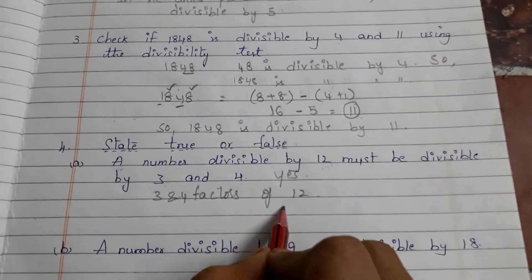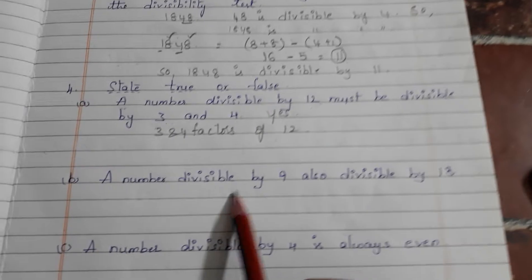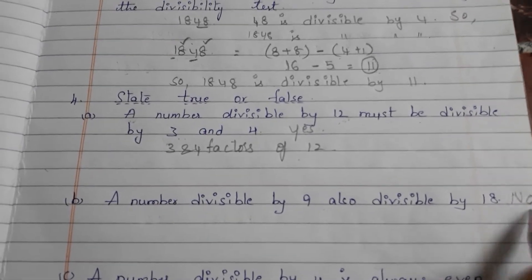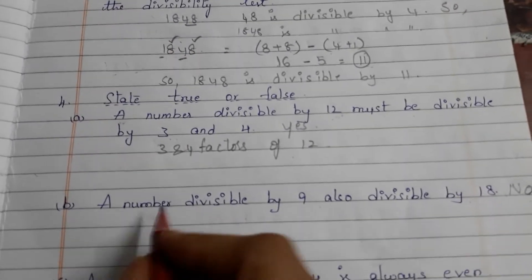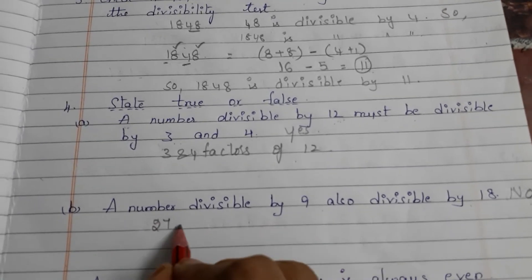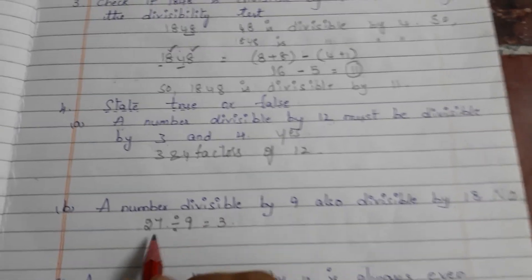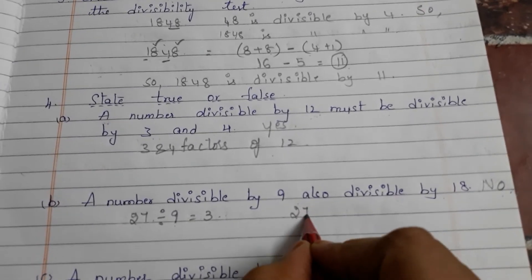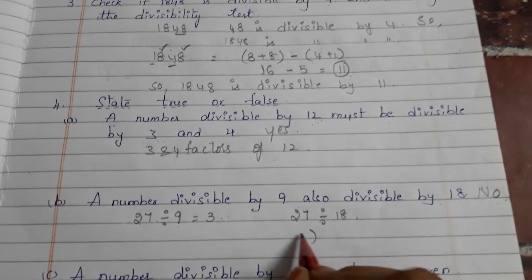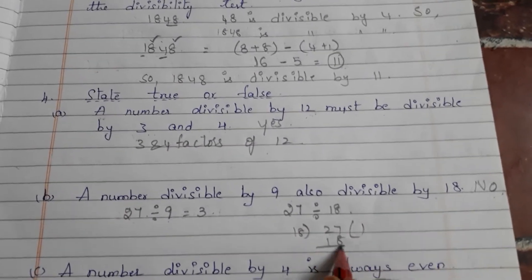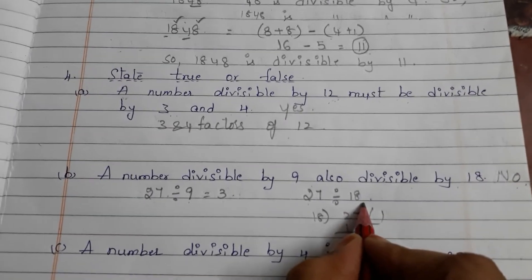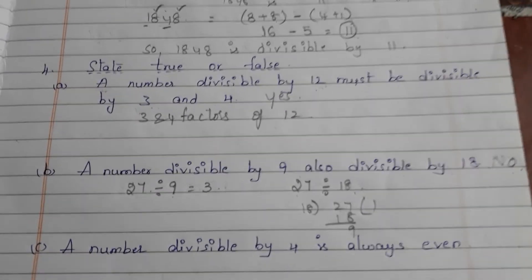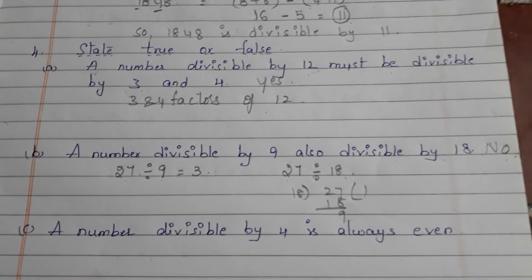Next: a number divisible by 9 also divisible by 18. This statement is false. Why? Let's see with an example. Take the number 27. 27 divided by 9 equals 3, so 27 is divisible by 9. Take the same number 27: is it divisible by 18? 18 into 27 goes 1 time, leaving a remainder. So 27 is not divisible by 18. The reason is: when a number is divisible by another number, it can't necessarily be divisible by its multiple.